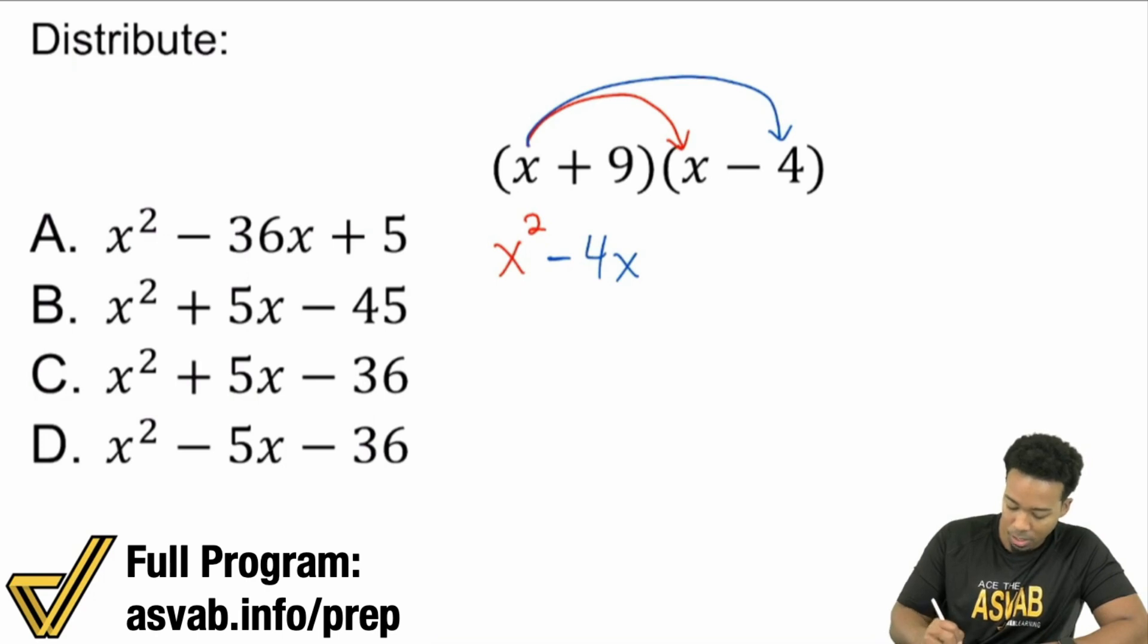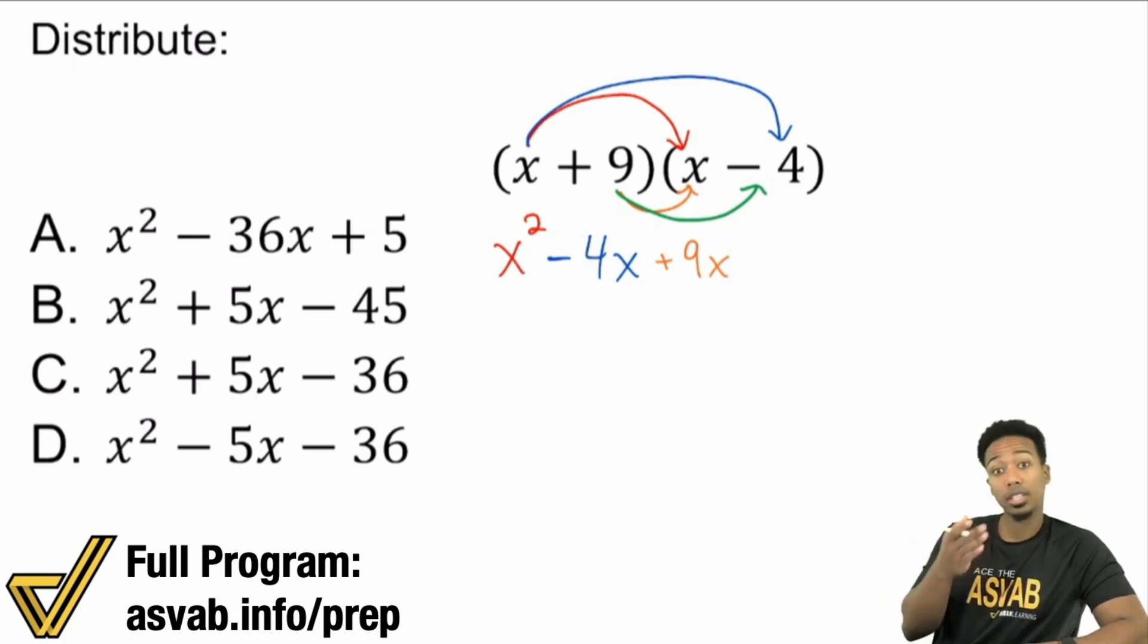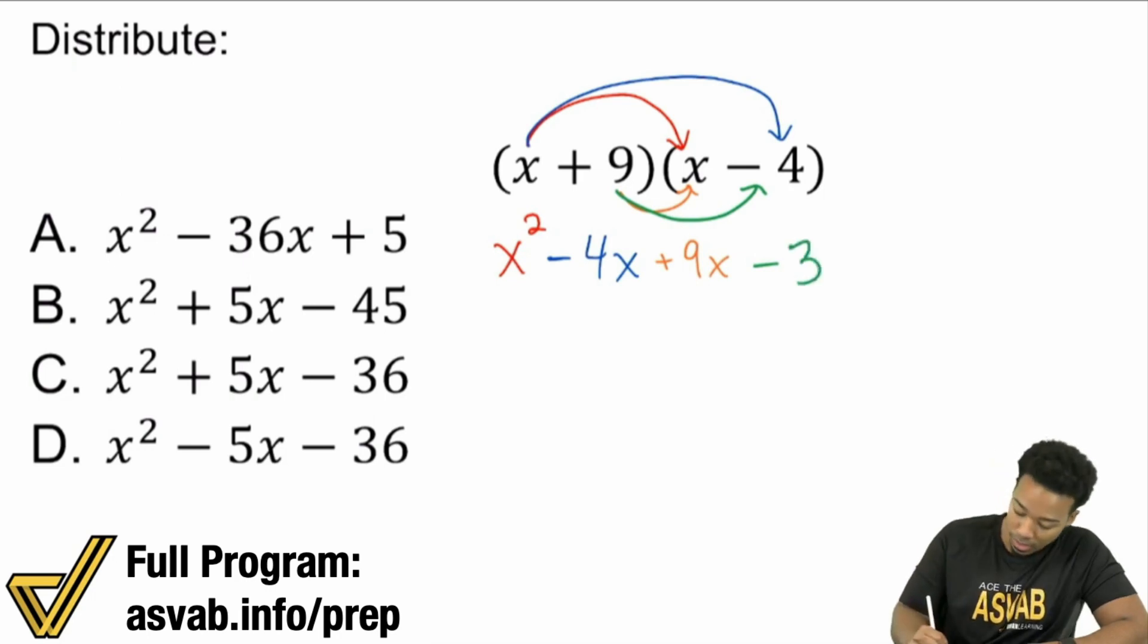The 9 now, since we already exhausted the x with both x and negative 4, again, we made sure that everything from here multiplies with everything from the other, right? Yeah. Now here, we're going to take the 9 with the x and the 9 with the negative 4. It is that simple, everybody. Again, just make sure everything from one parentheses multiplies with everything from the other. So 9 times x, 9x. Then, 9 times negative 4, while a positive times a negative gives me a negative. And then, 9 times 4 gives me 36. Boom.